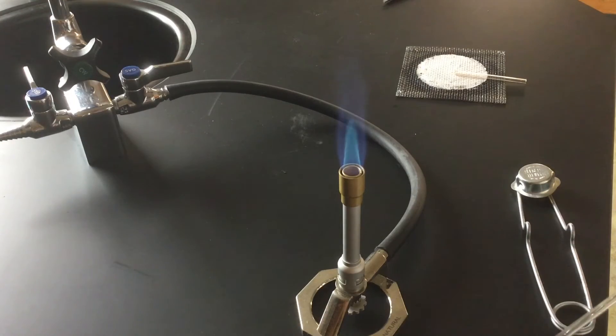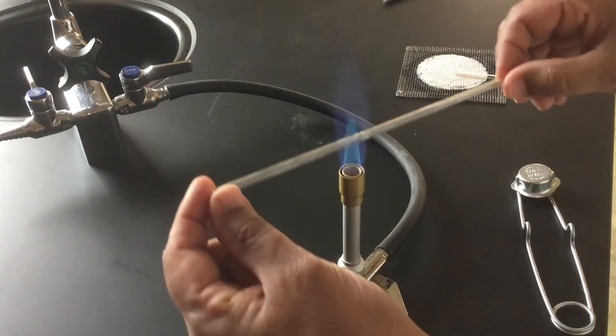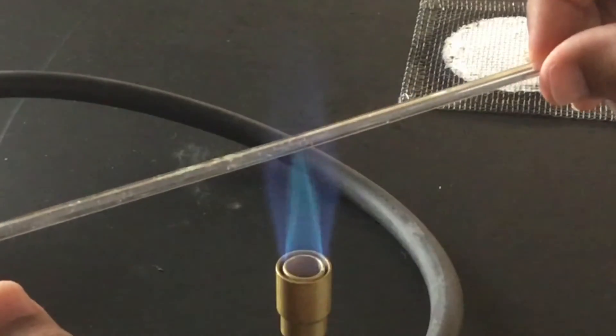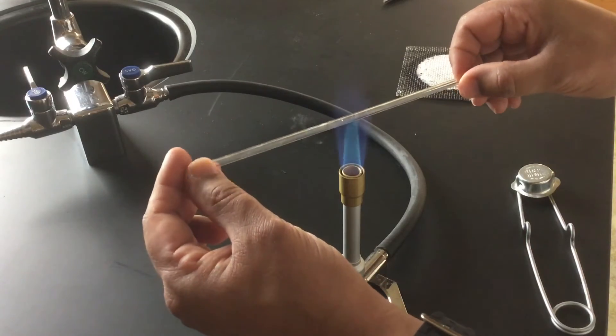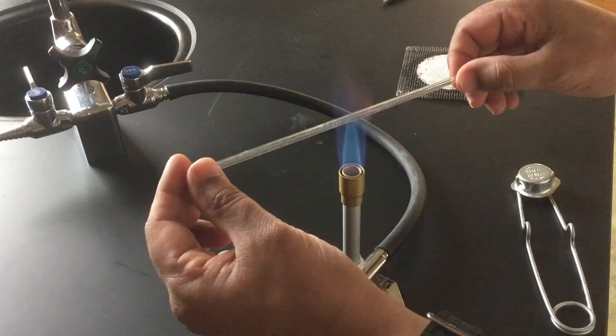So in case you've forgotten, the hottest part of the flame is the very peak of that inner cone. So I'm going to hold it right on top there, not too low, and just twirl it around between my thumb and forefinger. And after a few seconds of doing this,